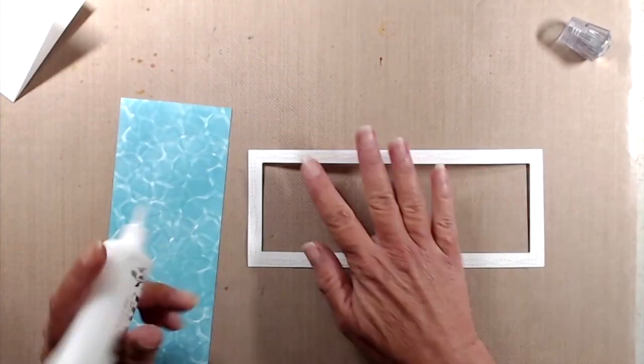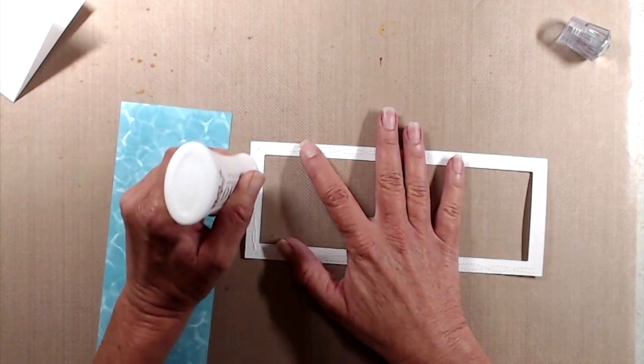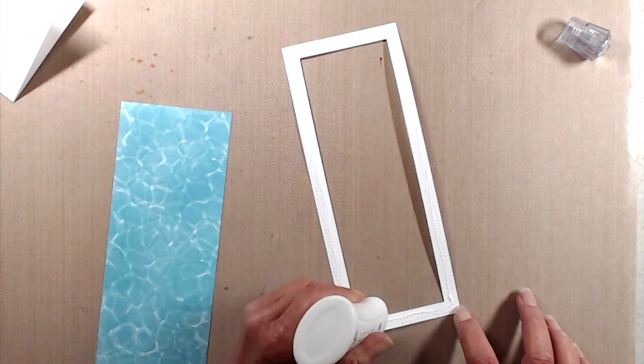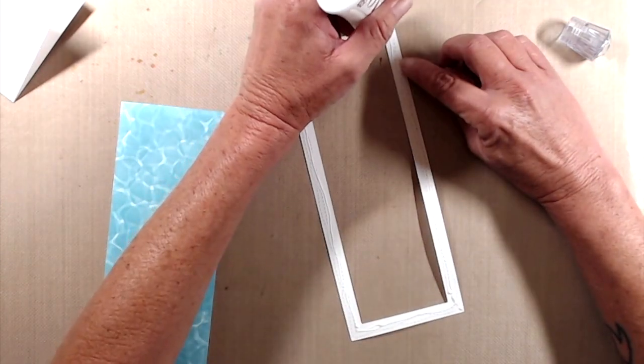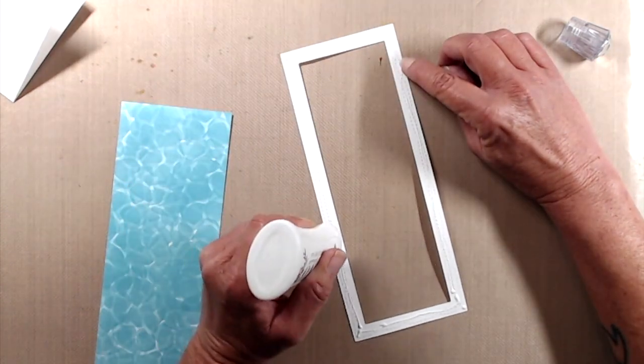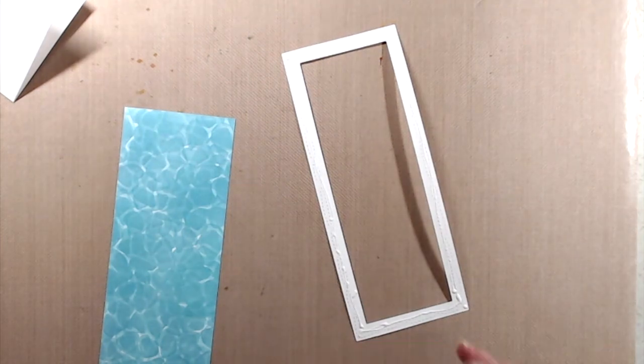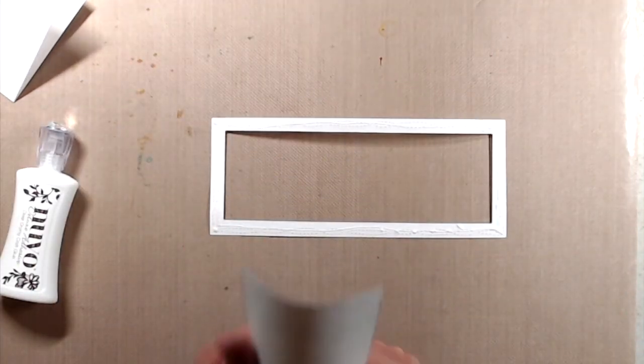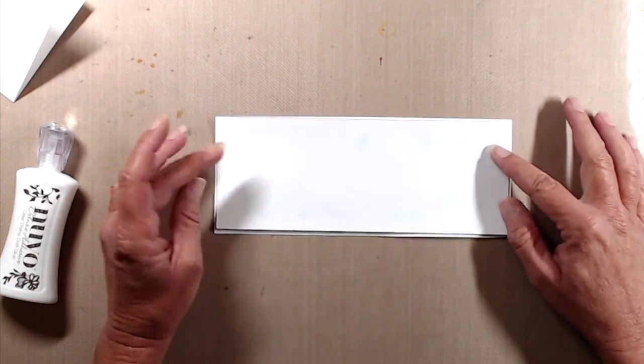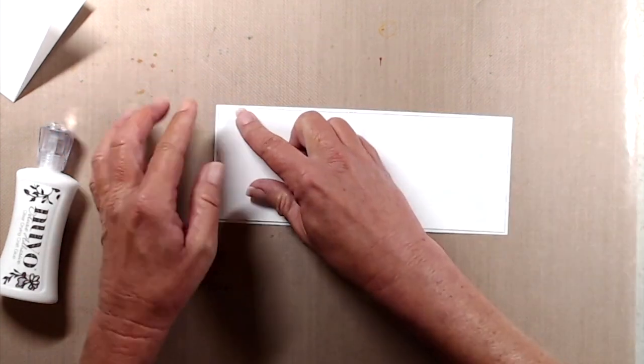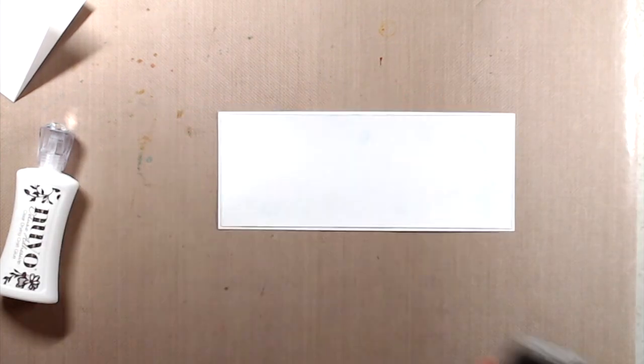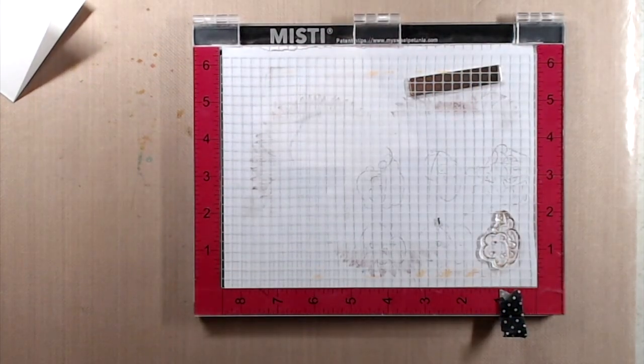To finish up the card, I used the wonky stitched slimline dies from Cat Scrappiness and I cut a frame using Neenah Classic Crest cardstock. I used liquid glue on the back of that and adhered that on top of my stenciled panel. The little critters that I'm going to be adhering to the front of that are from the Don't Worry Be Happy stamp set from Papery Ink, and I did do all of the coloring off camera just in the interest of time.